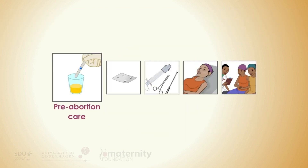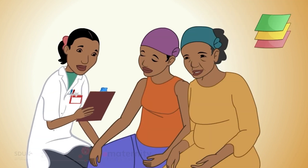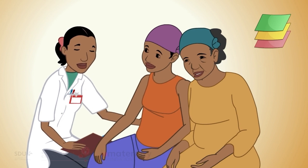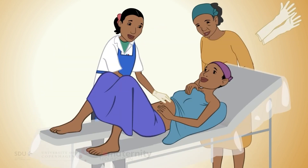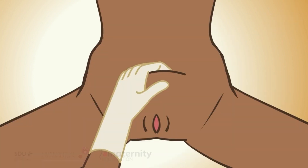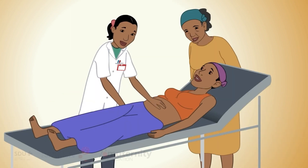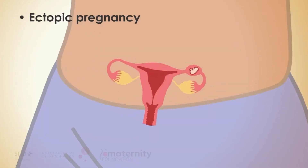Pre-abortion care. When a woman is seeking an abortion, you should start by confirming the pregnancy with a urine pregnancy test. Take a reproductive health history and identify contraindications to medical or surgical abortion. Perform a physical examination and date the pregnancy. If the uterus is smaller than expected, you should consider inaccurate gestational dating or an ectopic pregnancy.